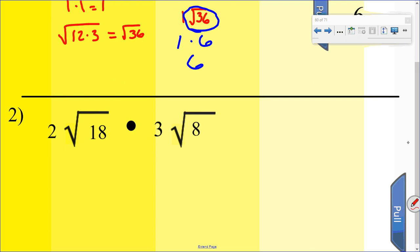Okay, if you multiply the outside numbers, 2 times 3, that'll give you 6. And then do your inside numbers, 18 times 8. I believe that gives you 144. So your answer's going to be 6 radical 144.